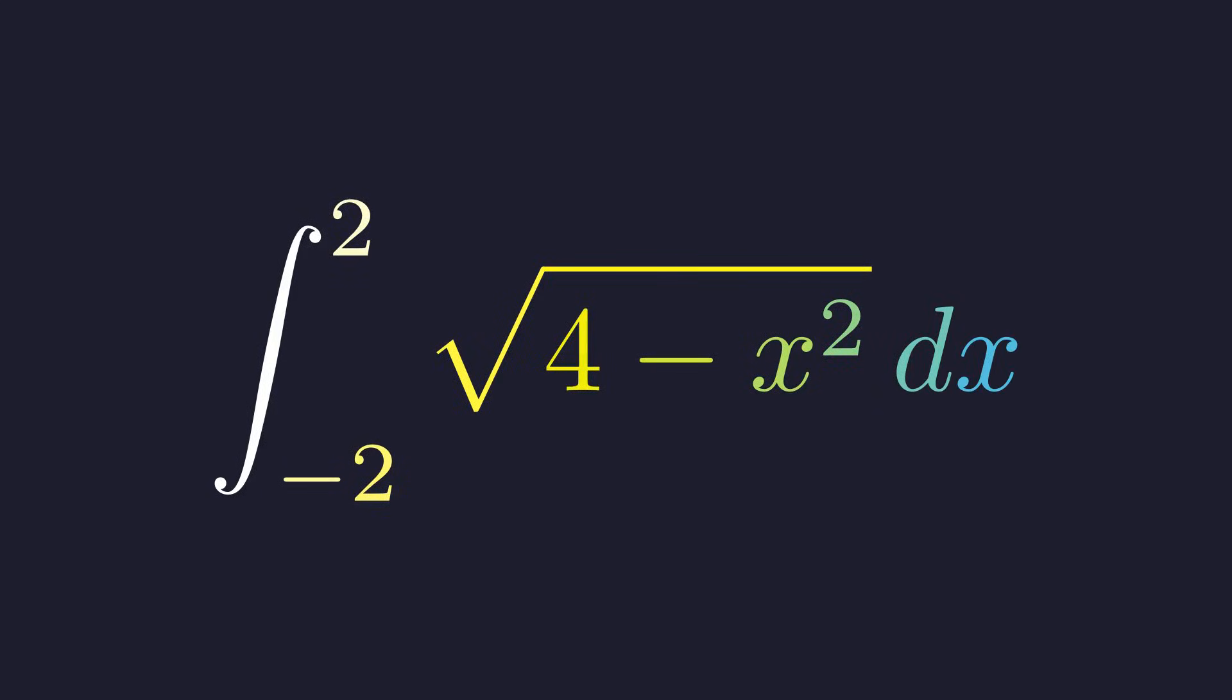Your calculus book never told you this. This terrifying integral needs zero calculus. Literally zero. The integral from negative two to two of the square root of four minus x squared. Welcome back to Mental Math. Let's dive in.